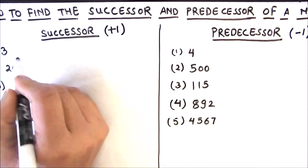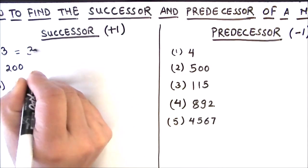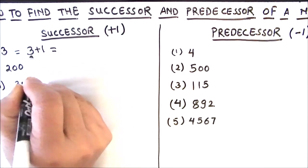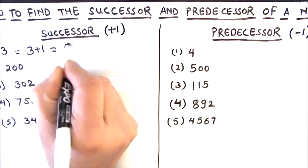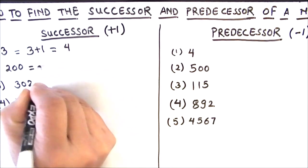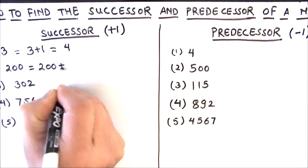Our first number is 3. For finding the successor of 3, we just need to add 1 to 3, so that's going to be 3 plus 1 which is 4.